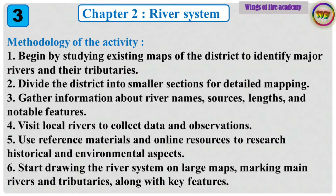Methodology of the Activity: 1. Begin by studying existing maps of the district to identify major rivers and their tributaries. 2. Divide the district into smaller sections for detailed mapping. 3. Gather information about river names, sources, lengths and notable features. 4. Visit local rivers to collect data and observations. 5. Use reference materials and online resources to research historical and environmental aspects. 6. Start drawing the river system on large maps, marking main rivers and tributaries along with key features.